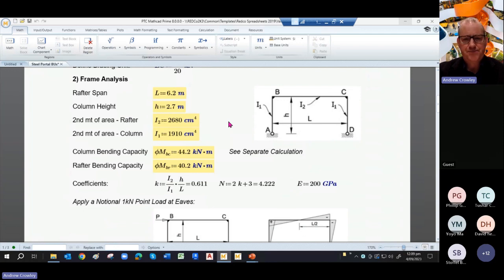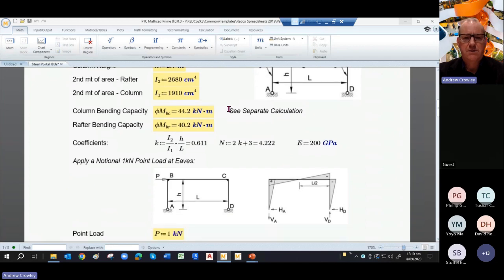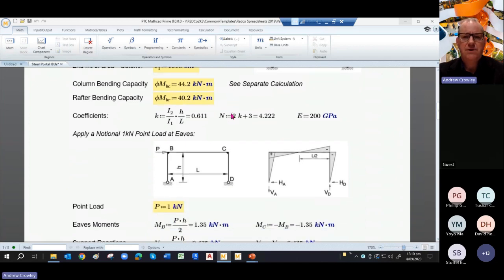So coming into the analysis, here is a typical portal frame that we use in a house. We have a rafter span. In this case it's a flat rafter, length 6.2 metres, height 2.7 metres. We've done some calculations separately to find out what the capacity of this frame is. So here is our designed bending capacity for the column and the rafter. We've also picked up what the I values are for the rafter and column.